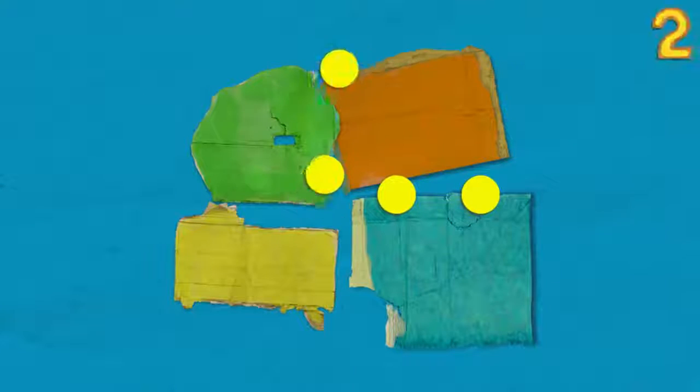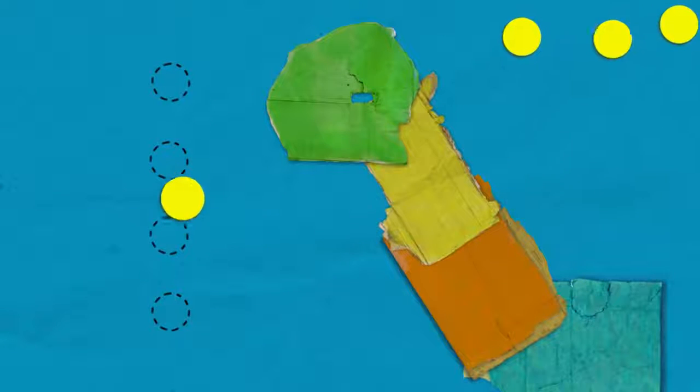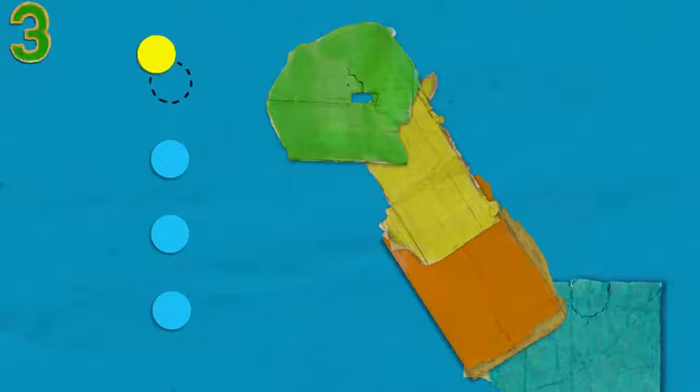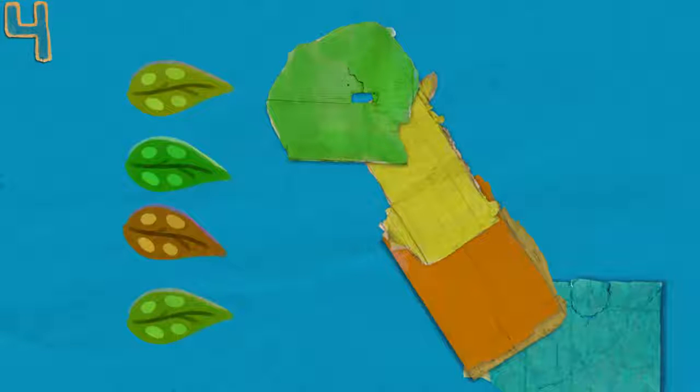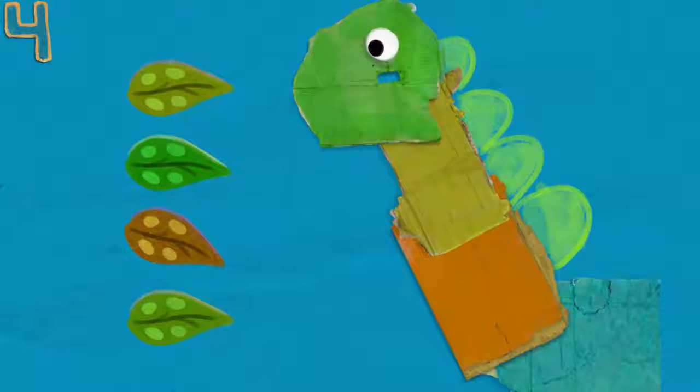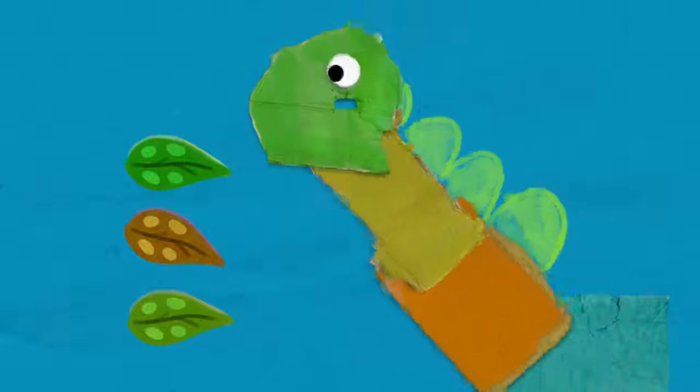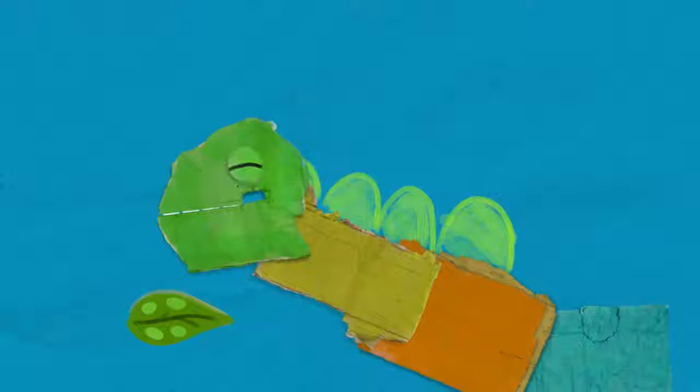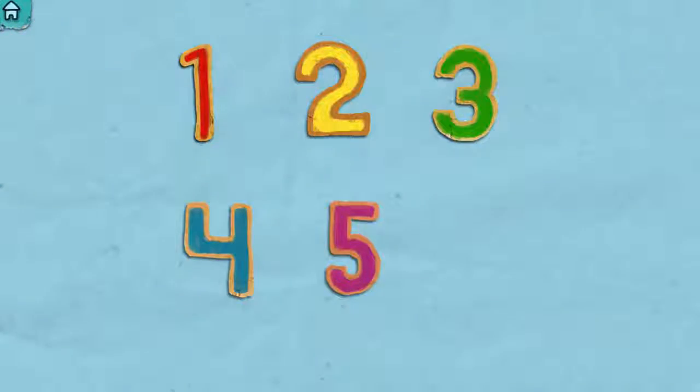One, two, three, four. Four leaves. Four leaves. The dinosaur eats one of the leaves, two of the leaves, three of the leaves, all four of the leaves. Hungry dinosaur.